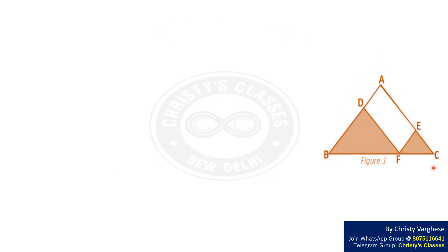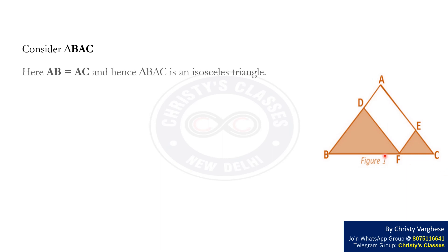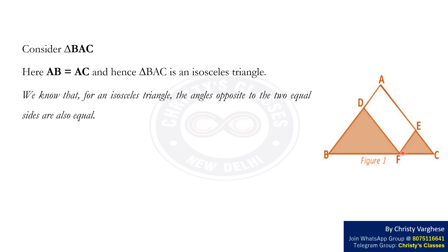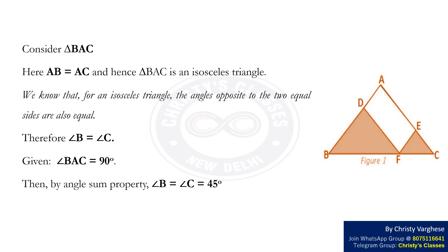Consider triangle BAC. Here AB equals AC, and hence triangle BAC is an isosceles triangle. We know that for an isosceles triangle, the angles opposite to the two equal sides are also equal. Therefore, angle B equals angle C. Given that angle BAC equals 90 degrees, by the angle sum property, angle B and angle C equal 45 degrees each.